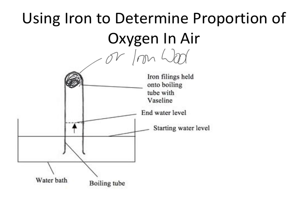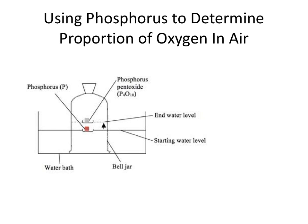So another way we could do this is using phosphorus. Now this method is much quicker; I think that's important to know that this is quicker than the previous experiment. What you have here is a bell jar sitting in a trough of water, and in the trough of water we have a little crucible that floats on the water, and inside the crucible we have some red phosphorus.